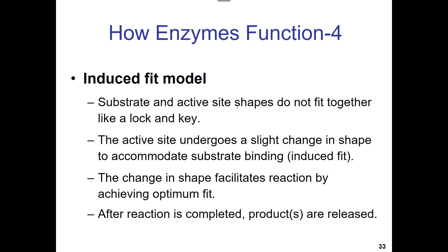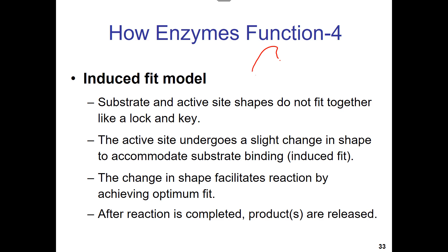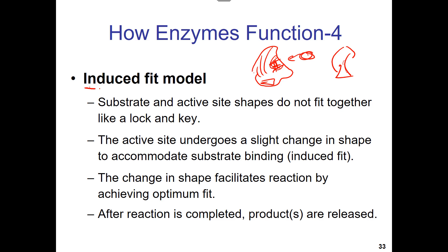We used to teach this with a lock-and-key analogy — the enzyme as a keyhole and the substrate as the key. But in reality it's more like a baseball glove: when the ball goes into the glove, the glove wraps around it more. We call that the induced fit model — the substrate induces a change in the enzyme so that it fits better.